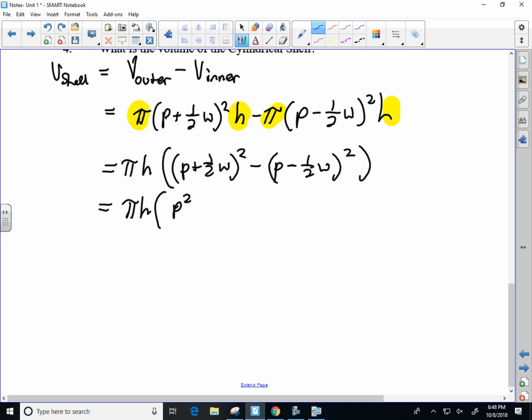P² plus PW plus one fourth W² so just foiling, and then minus from that P². P² so this would be minus PW plus one fourth W². That's just distributive property, so good old algebra one there, early college algebra maybe even beginning algebra. From there we could simplify: these would cancel, these would cancel, these two would combine.